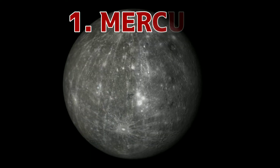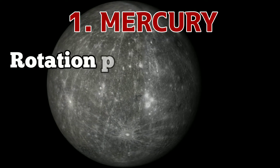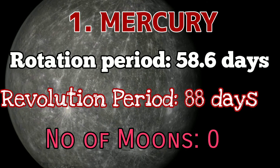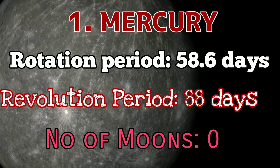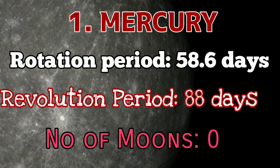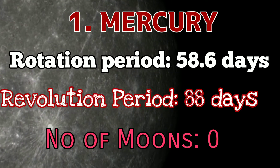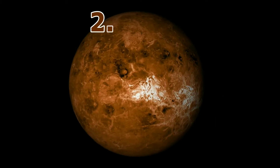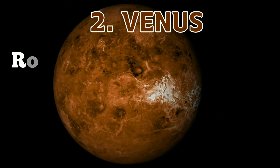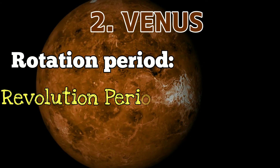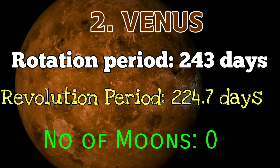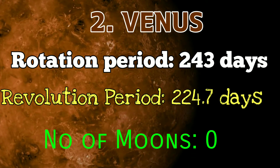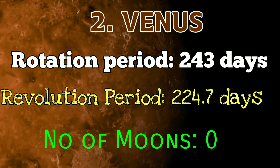Mercury: Rotation Period 58.6 Days, Revolution Period 88 Days, Number of Moons 0. Venus: Rotation Period 243 Days, Revolution Period 224.7 Days, Number of Moons 0.